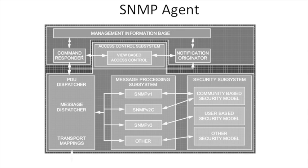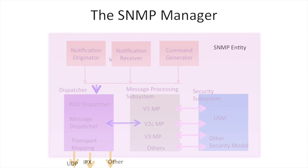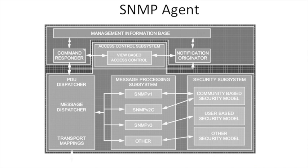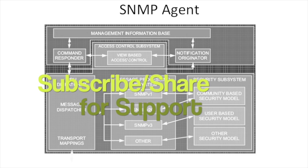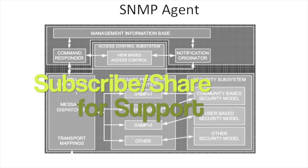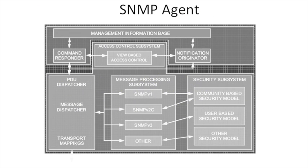On the agent side, we have the command responder and notification originator. The message dispatcher and transport mapping communicate with the command responder as well as the notification originator. The PDU dispatcher, message dispatcher, and transport mapping communicate with the message processing system supporting SNMPv1, SNMPv2c, and SNMPv3. Version 1 and version 2c use a community-based security model like public or private. SNMPv3 uses the User-Based Security Model, or USM, while others use their respective security models.